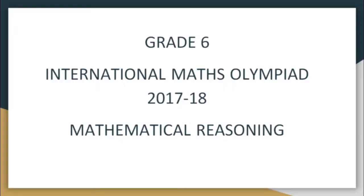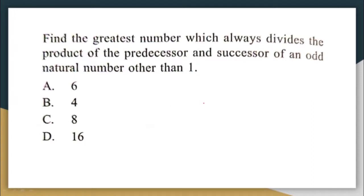Hello children. In this video we will solve questions that were asked from the mathematical reasoning section in the International Math Olympiad 2017-18 for Standard 6. Find the greatest number which always divides the product of the predecessor and the successor of an odd natural number other than one.